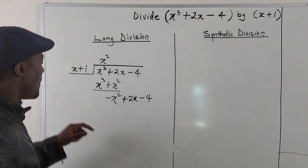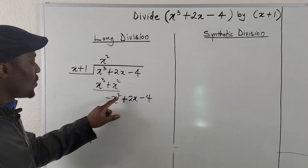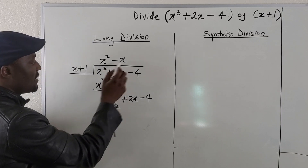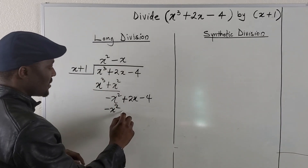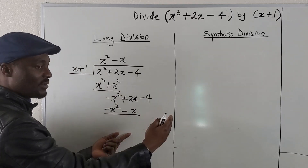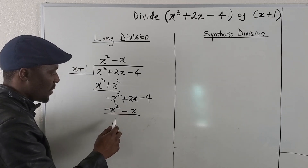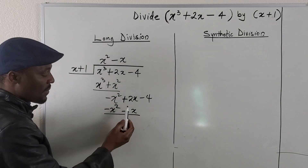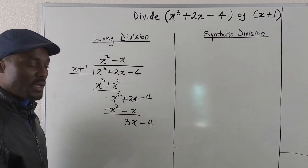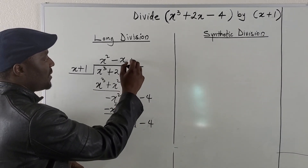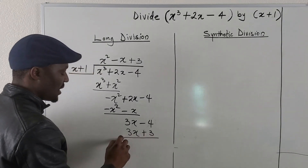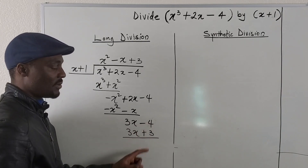Don't subtract this from this because these two are not similar terms. So this is going to be negative x squared, and then you can drop plus 2x minus 4 — just bring everything down. You repeat the process: if you divide negative x squared by x, what would you get? You get negative x. Negative x times x gives you negative x squared, and negative x times 1 will give you negative x. Now you subtract again — this zeroes out, and 2x minus negative x is going to be 3x. Then this becomes negative 4. If you divide 3x by x, you get plus 3. 3 times x gives you 3x, and 3 times 1 gives you 3. We do our subtraction again — this zeroes out, and negative 4 minus 3 is going to be negative 7.